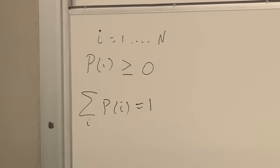Symmetry is the thing which dictates probabilities. Probabilities are usually taken to be equal for configurations which are related to each other by some symmetry. Symmetry means if you act with the symmetry — you reflect everything, you turn everything over — the system behaves the same way.